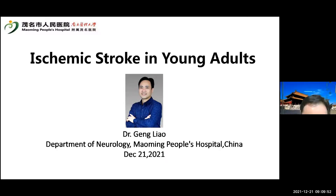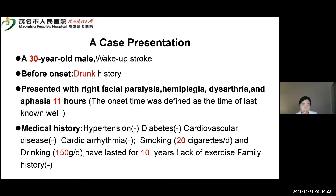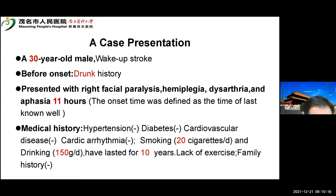My topic is ischemic stroke in young adults. Let me present a typical case. A thirty-year-old man was suffering from a sudden onset after drinking, presenting with right facial paralysis, hemiplegia, aphasia, and dysarthria. His medical history included hypertension, diabetes, cardiovascular disease, and hyperlipidemia.